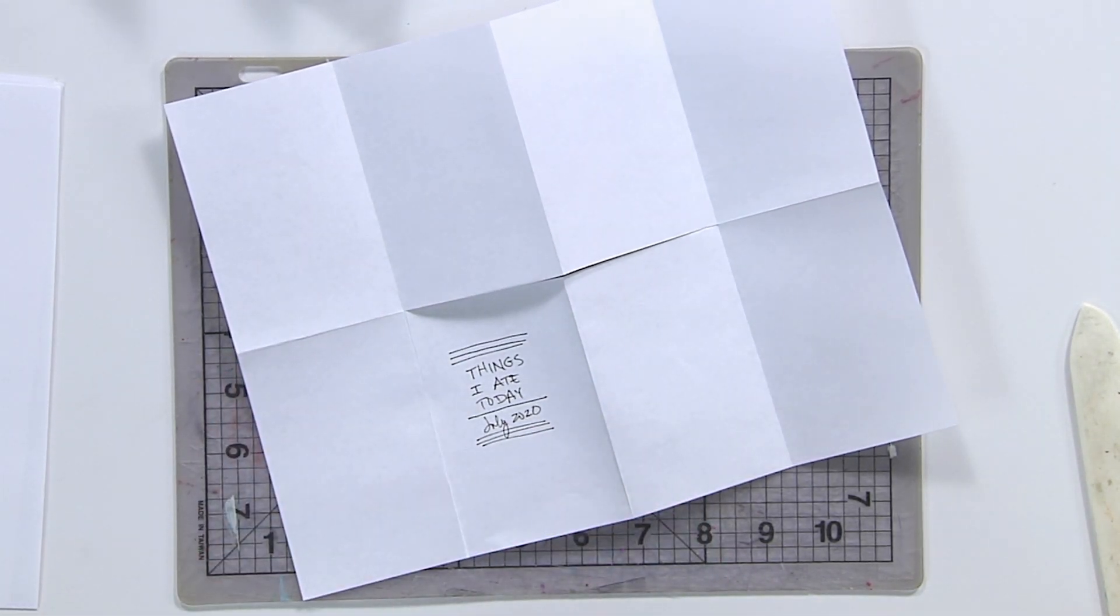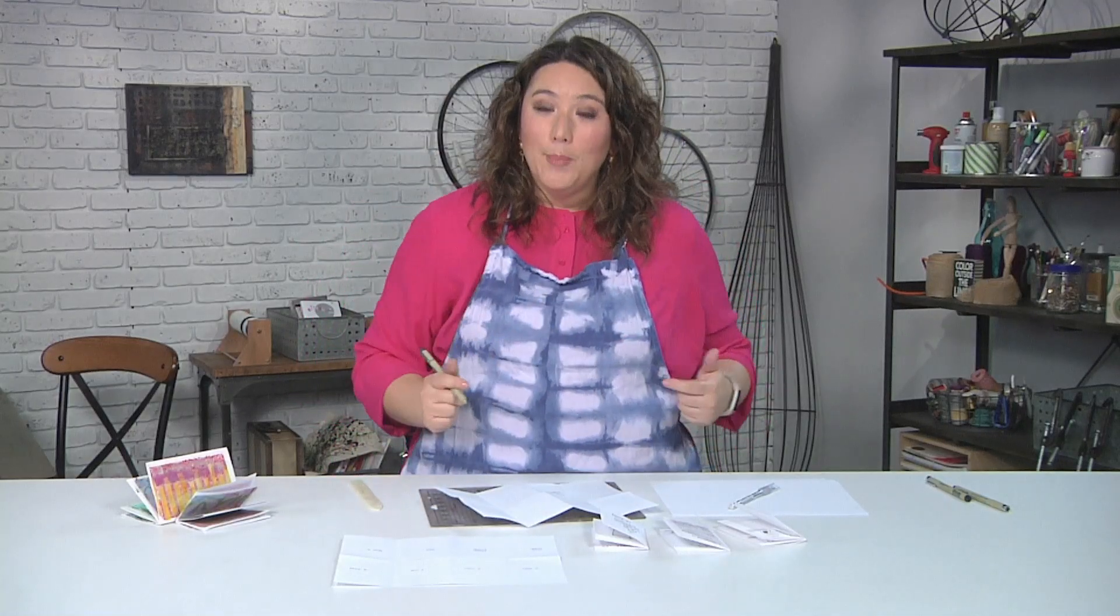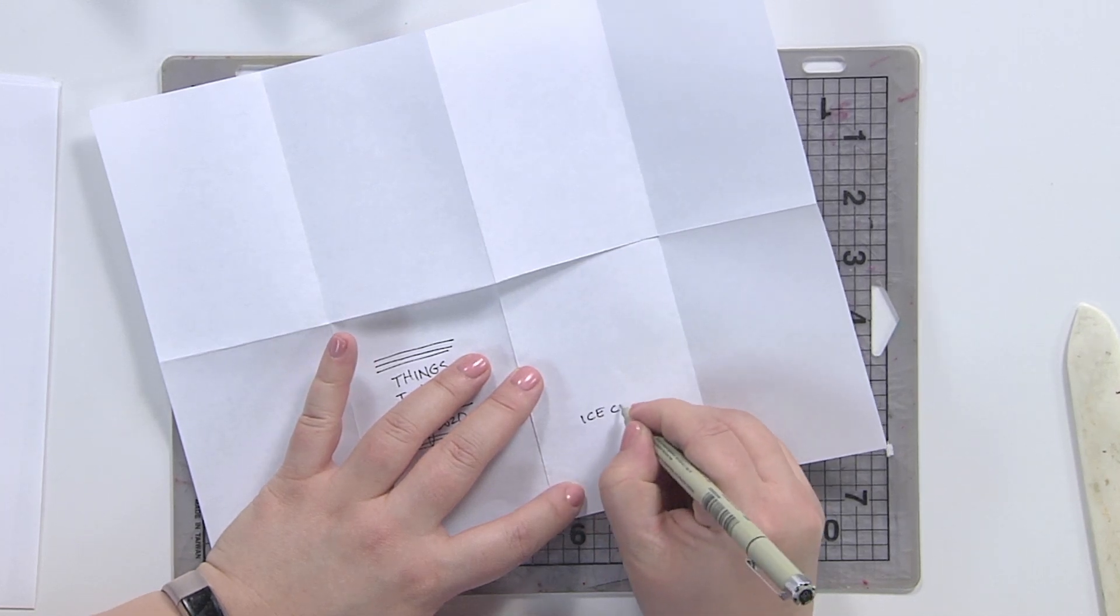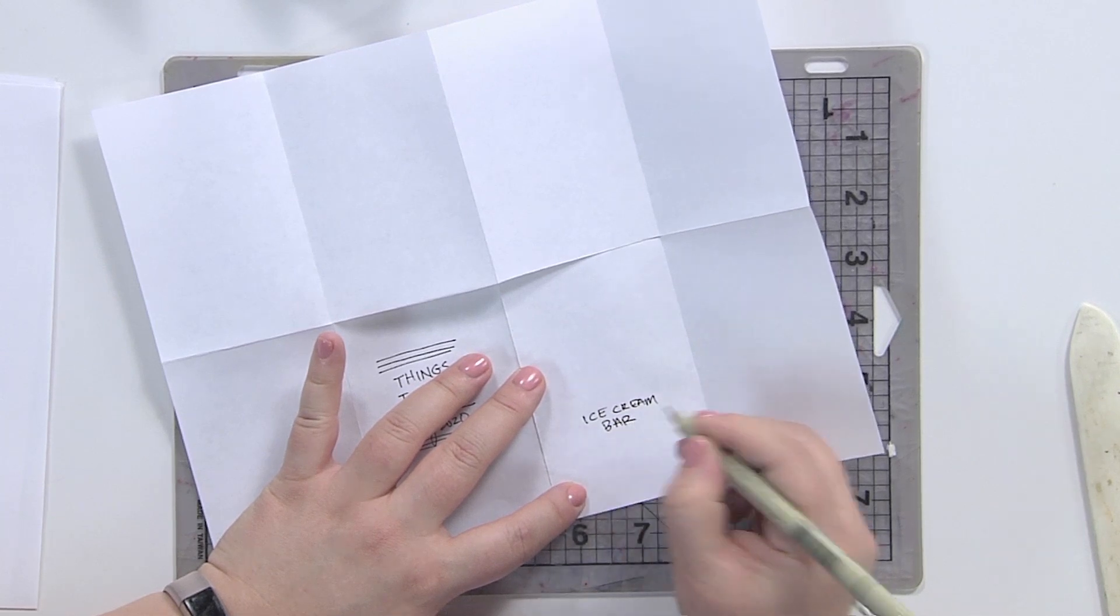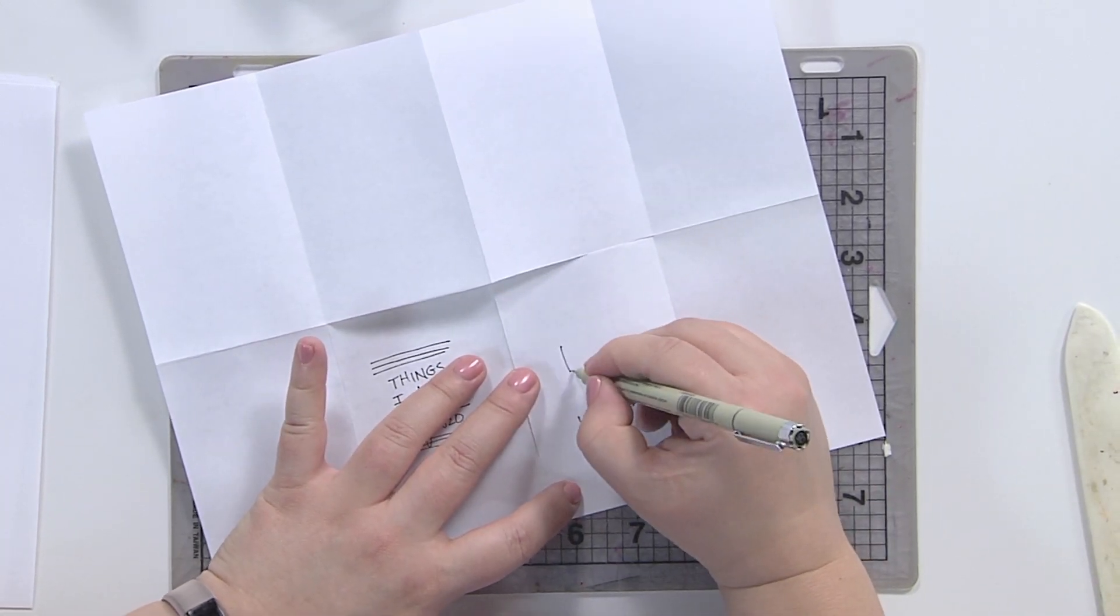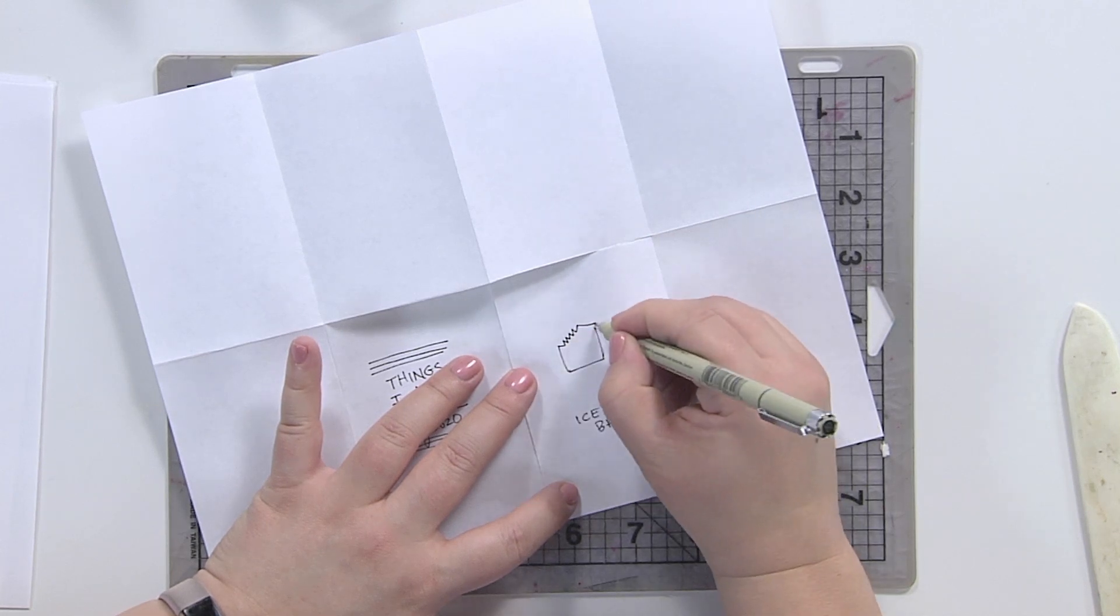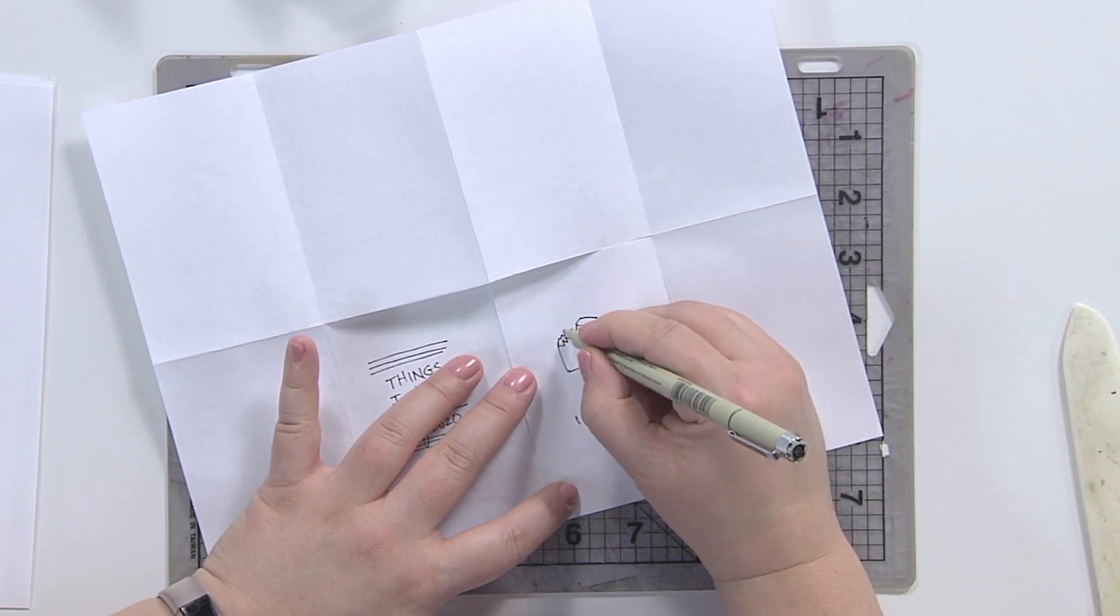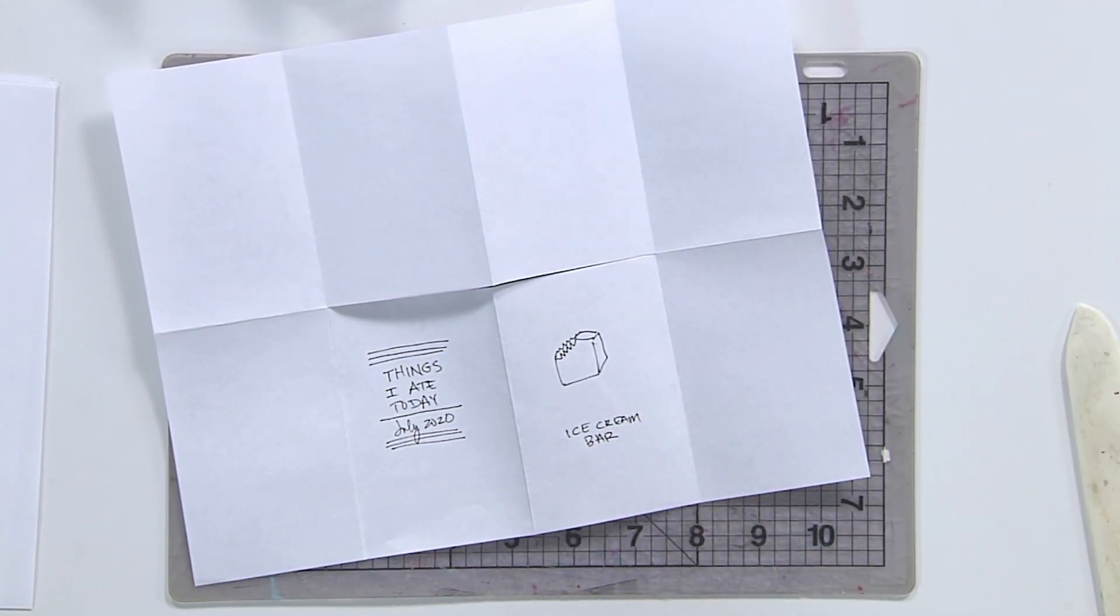Now, don't worry about drawing. What's something that I ate today? I had a Klondike bar. So I'm going to go ahead and say that I had my ice cream bar right here, and I'm going to draw it. What does it look like? Hmm, it looks like kind of a square like this with a bite out of it. And we can make it a little bit more square. But again, this doesn't need to be an amazing drawing. That's enough to remember exactly what it looked like.